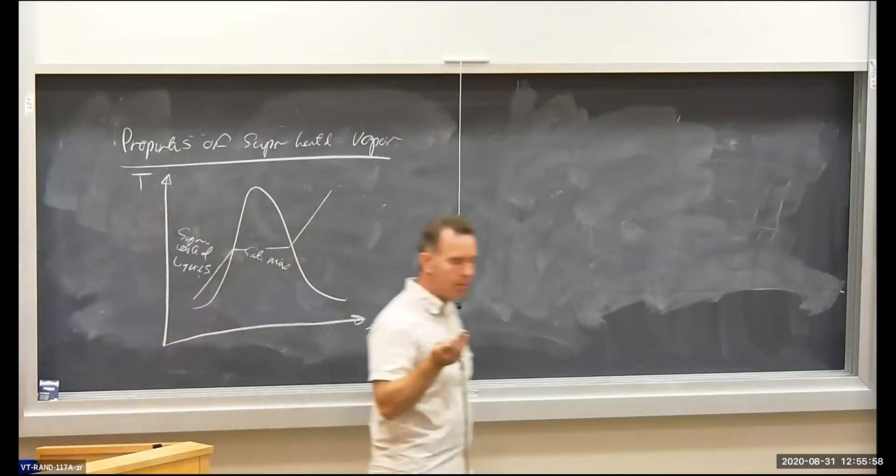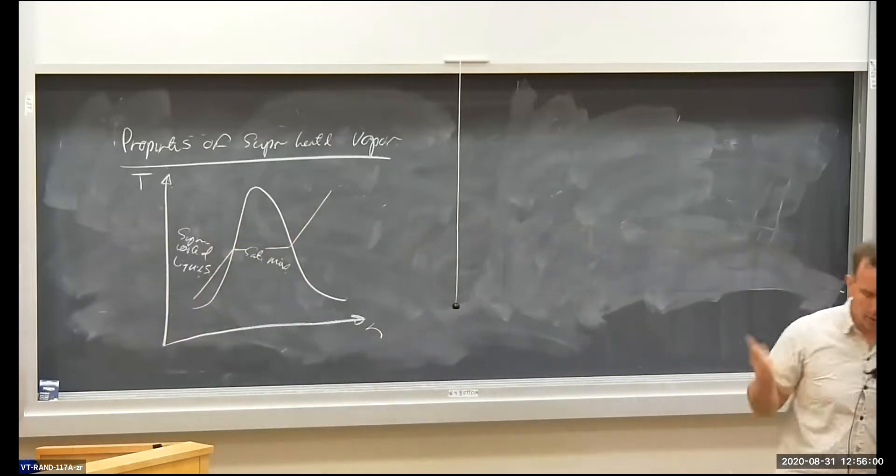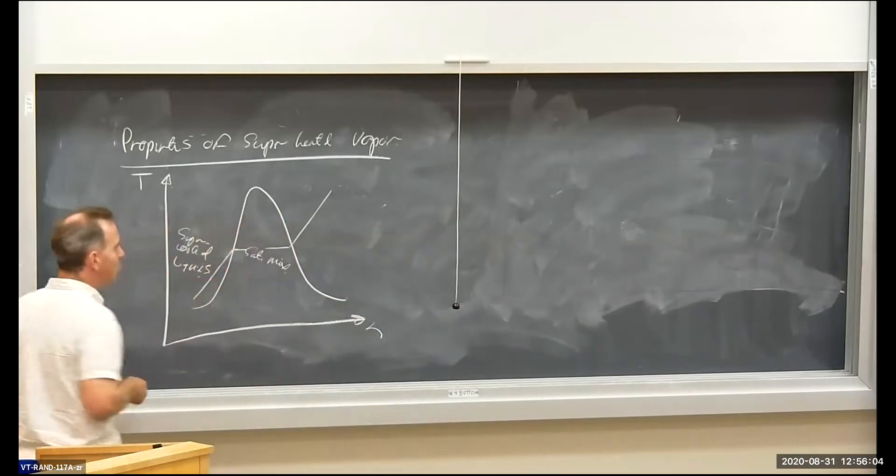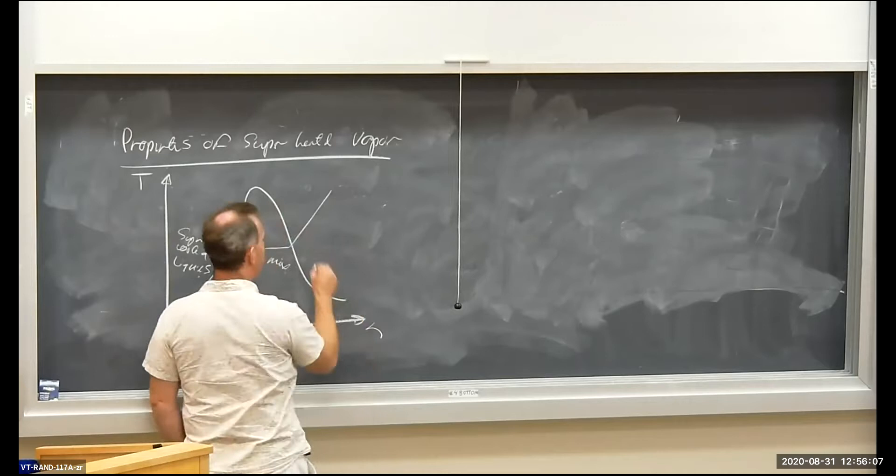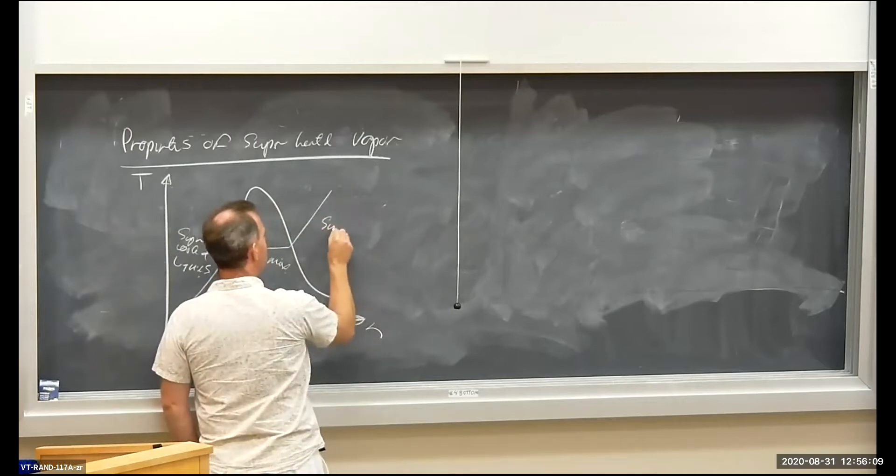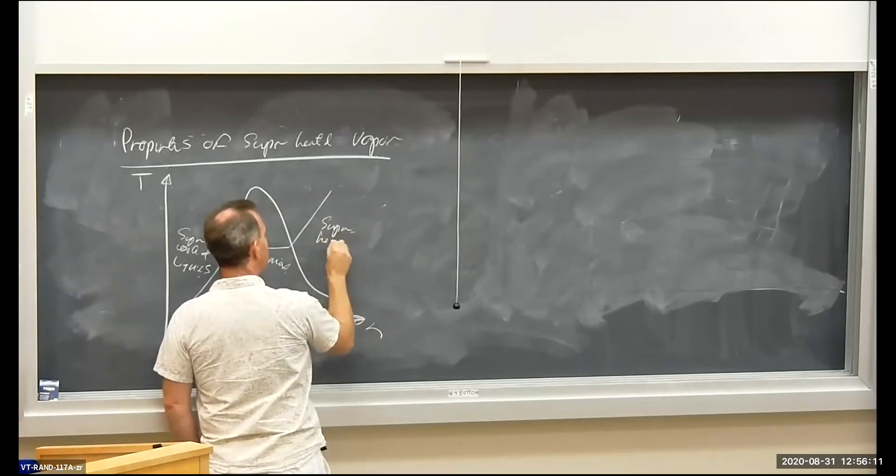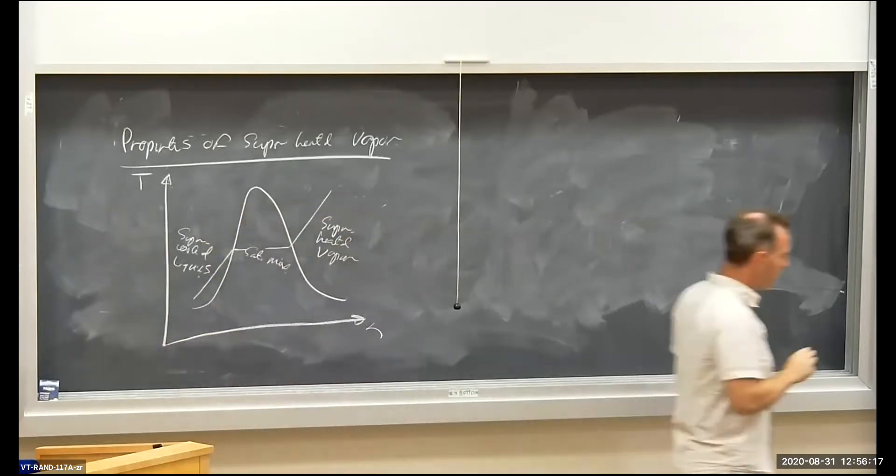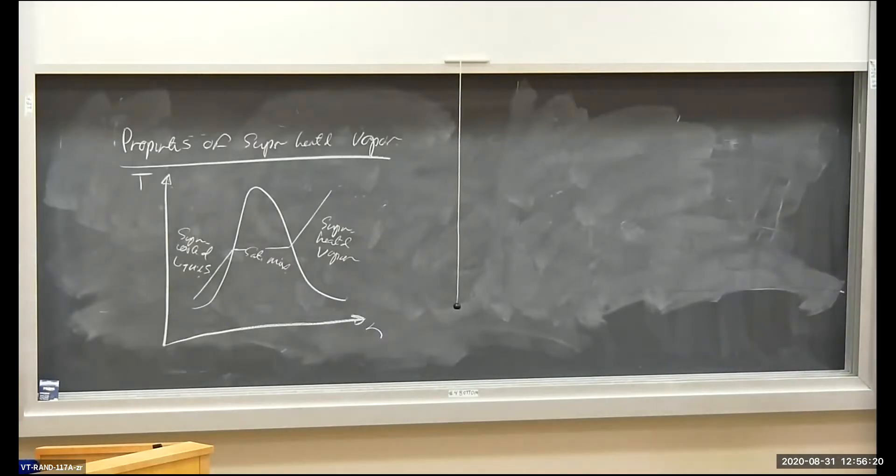cooled liquids. We just did a problem involving supercooled liquids where we have those property approximations for specific volume, internal energy, and enthalpy. And then out here, we have superheated vapor. So this side of the dome, out to the right, we have a vapor or superheated vapor.